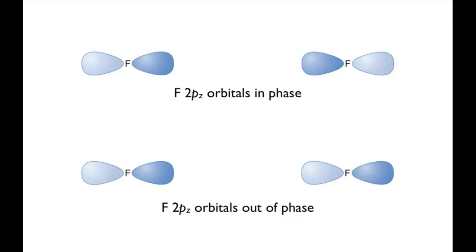For F2 these combinations would lead to the sigma bonding and antibonding orbitals, but in XeF2 the fluorine atoms are much further apart so there's little interaction between these orbitals and the two combinations are approximately the same energy.